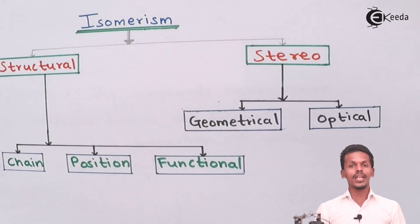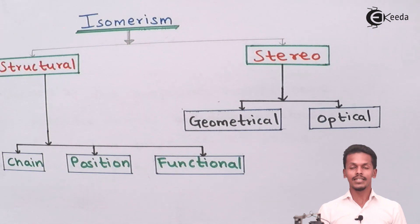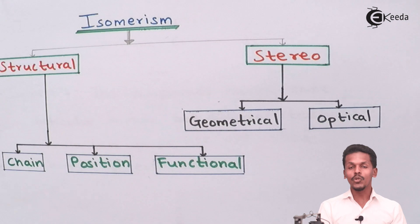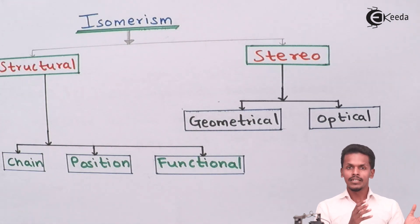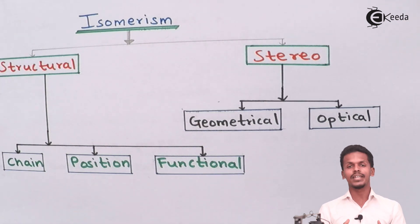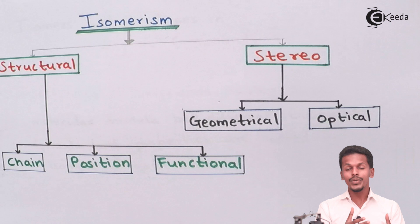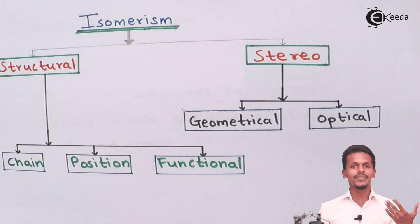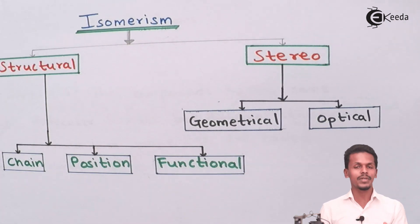Isomerism is the phenomenon or property shown by molecules that have the same molecular formula but different structural formula or different properties from each other. So isomerism is the phenomenon in which we observe the isomer property.